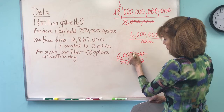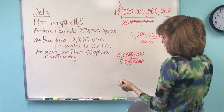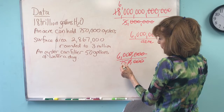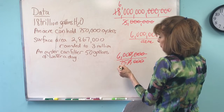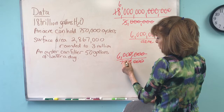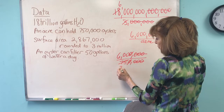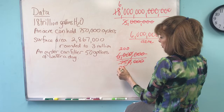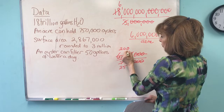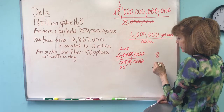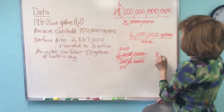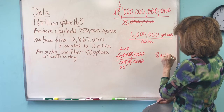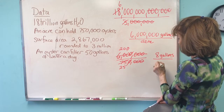Cancel that, cancel that, and we can reduce. 3 goes into this 25 times, 3 goes into this 200 — that would be 8 gallons per oyster.